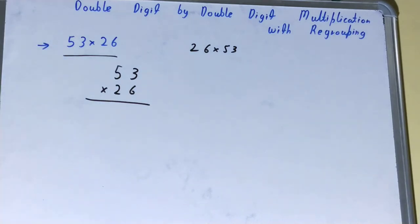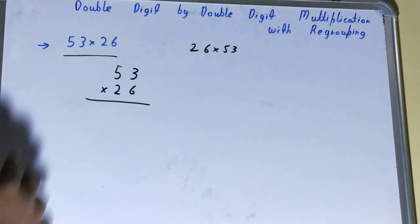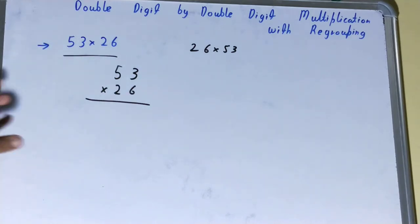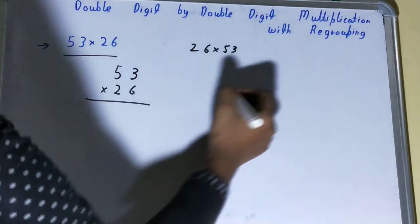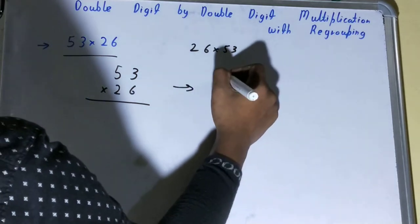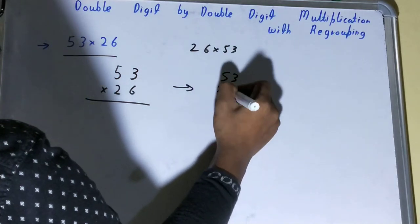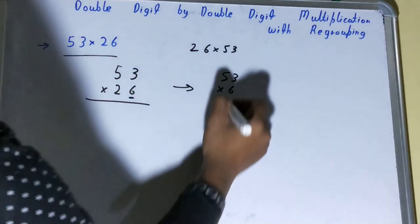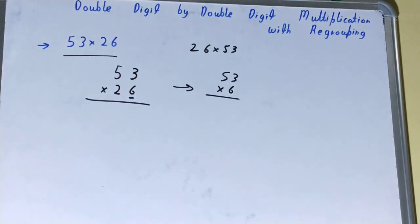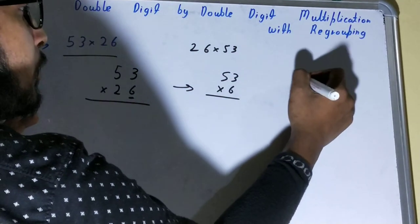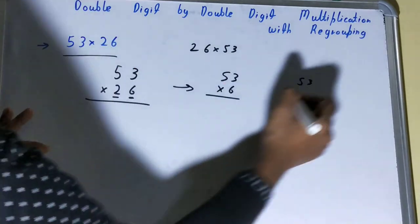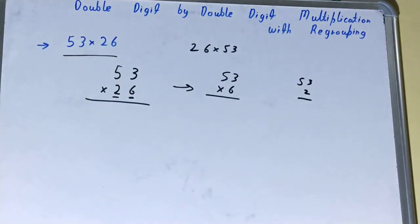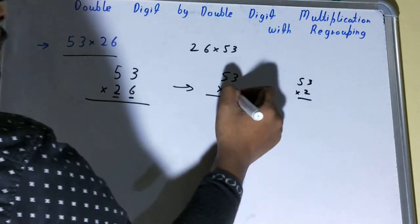Once you are done with that, you need to multiply them. But what we actually do in this multiplication process is we find out the results separately and we group them up to obtain the answer. Like you can imagine it: 53 into 6 because it is at the ones place, so first this will multiply. And in the second step, 53 into the other number, that is 2. So first let's multiply this.